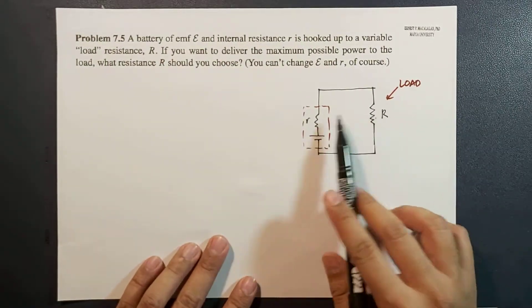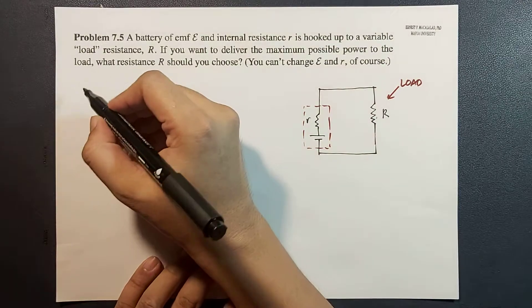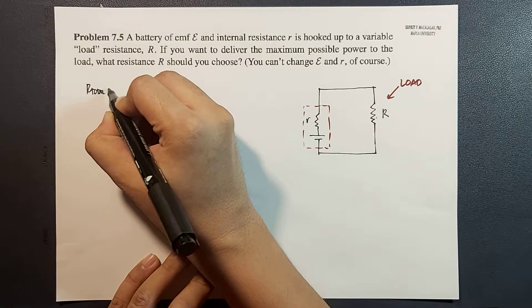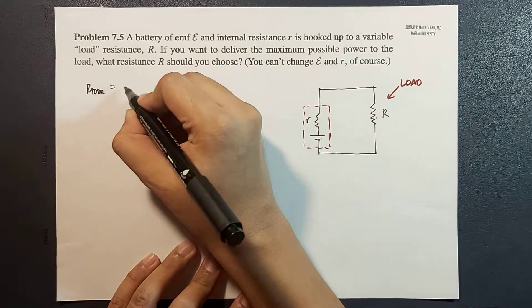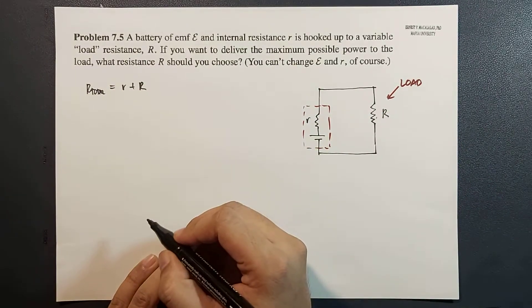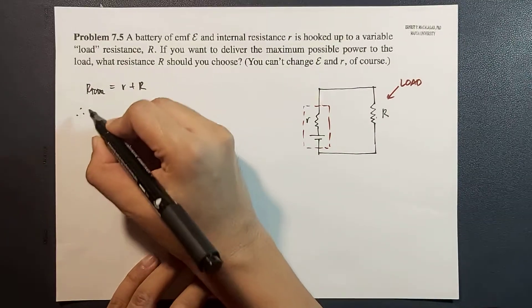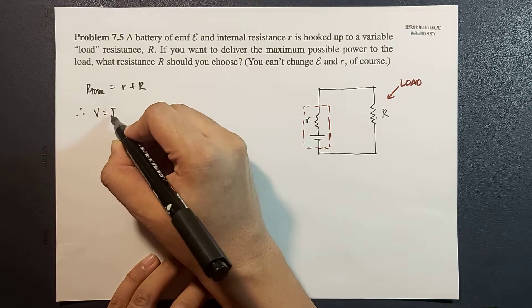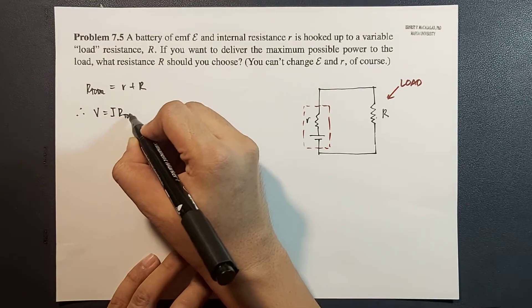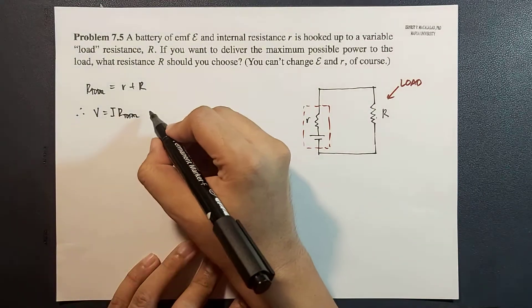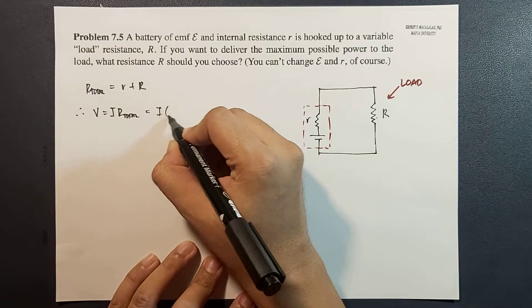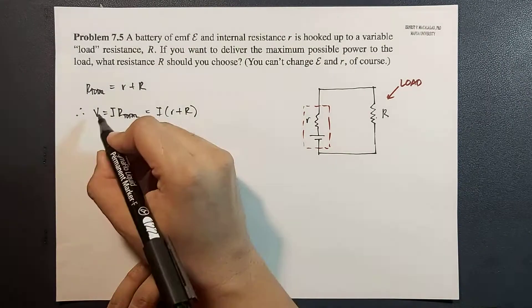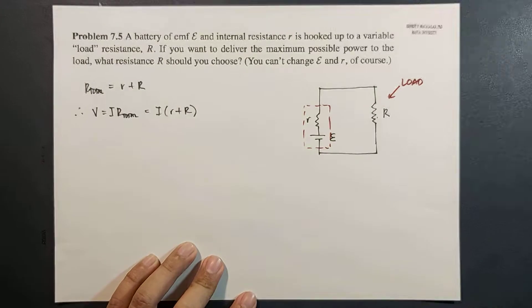We can combine the two resistances, and for this series circuit the total resistance is R plus r. Therefore, by Ohm's law, V equals I times R total, or epsilon equals I times (R plus r).